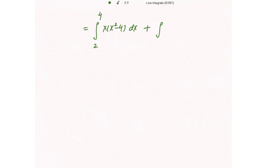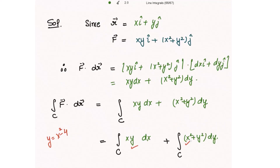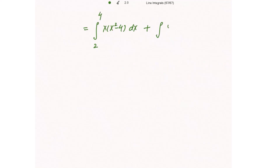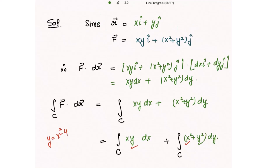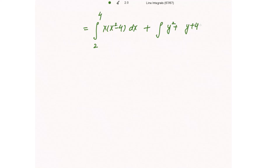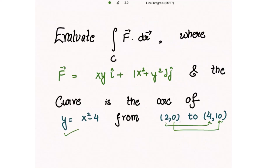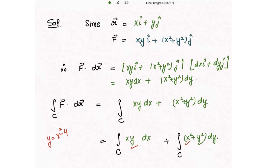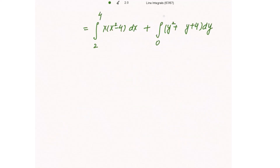For the second integral in y, substituting x² = y + 4, we get (y² + y + 4) dy, where y varies from 0 to 10.